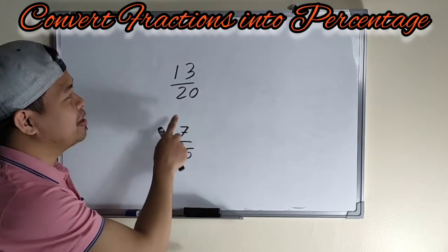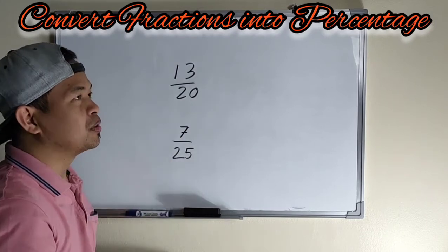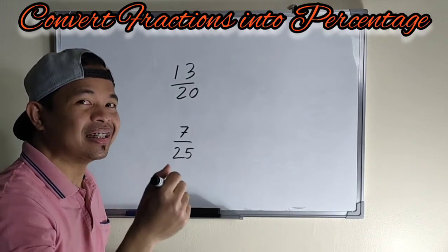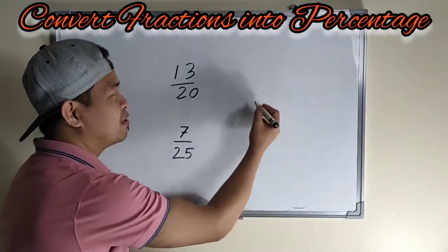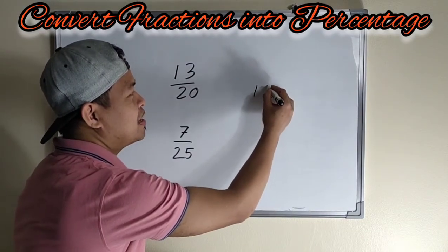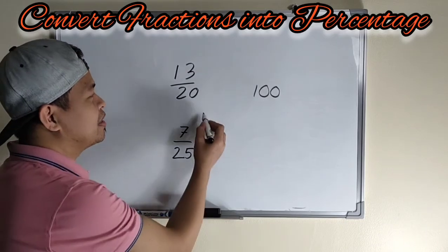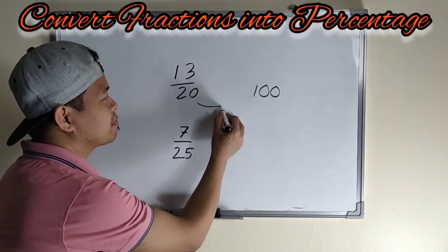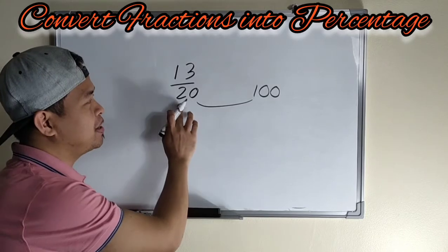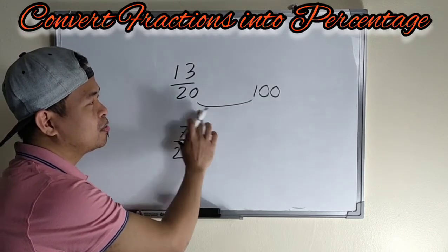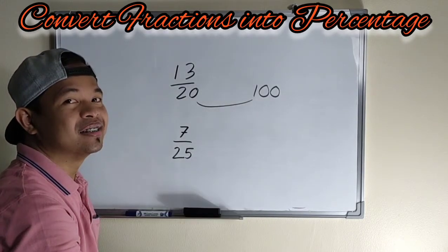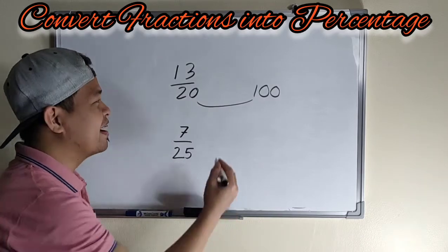So first example, 13 over 20. So percentage natin, lagi nyo pong tatandaan, we need to get 100 or we need to use 100. So then, anong pwede natin i-multiply sa 20 to get 100? Okay, tama. So 5.